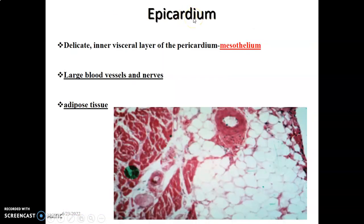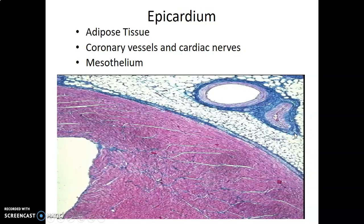The epicardium, the outermost portion, contains connective tissue, collagen, elastic fibers, and adipose tissue around the heart, along with neurovascular structures. The outer lining is a mesothelium of the visceral pericardium — simple squamous epithelium. You can appreciate adipose tissue and neurovascular structures including the coronary vessels that supply the heart, before you get to the mesothelium.